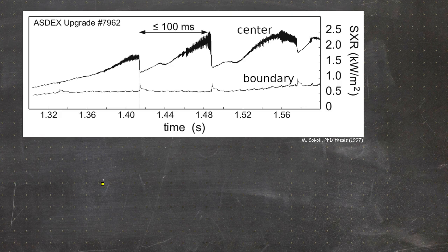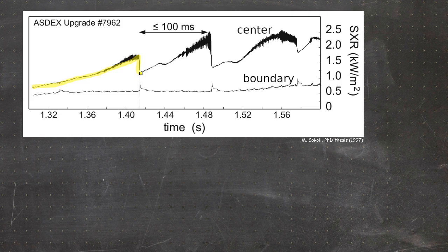As you can see in these time traces from the ASDEX Upgrade tokamak — one trace in the center and one at the plasma boundary — the soft x-ray radiation, which is proportional to density and temperature, increases in the plasma center, then suddenly drops. This is called a crash. It increases again, suddenly drops, and so on. This sawtooth-like behavior is what we call sawtooth instability.